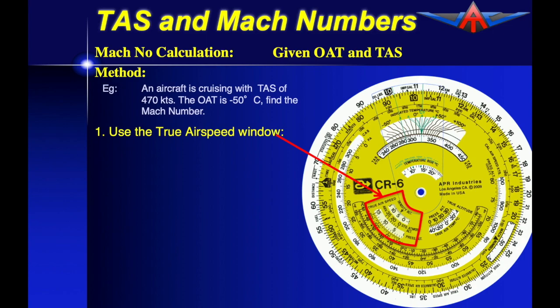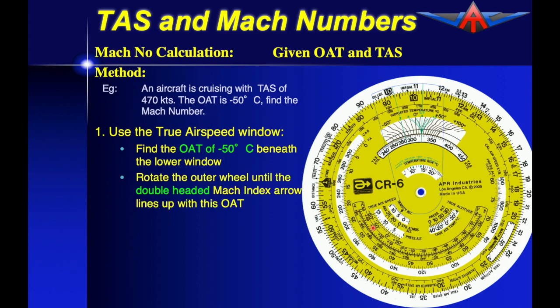The first thing to note is that we're going to use this true airspeed window which is the double window and we're going to use the lower portion of this. We need to find the negative 50 degrees which is out here below the lower window and we need to rotate the outer wheel until we see a double headed arrow appear in here.